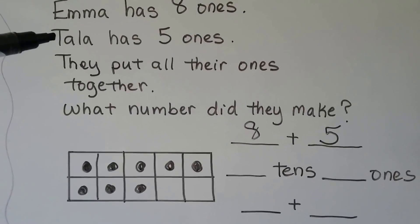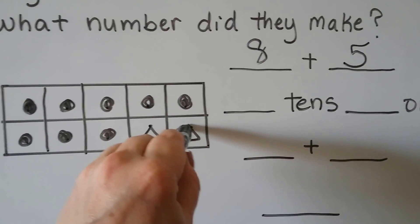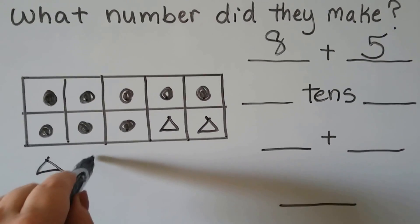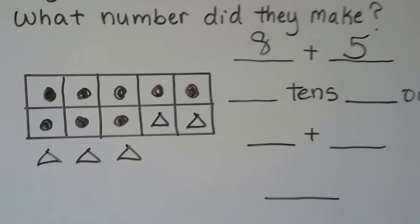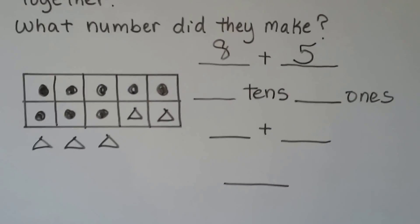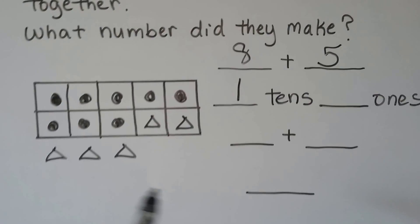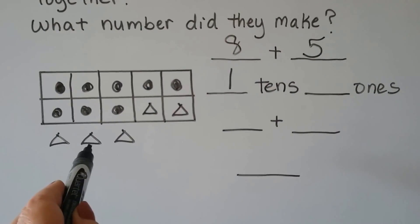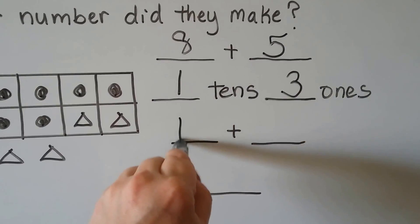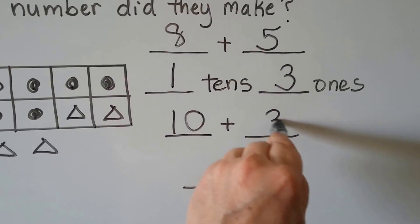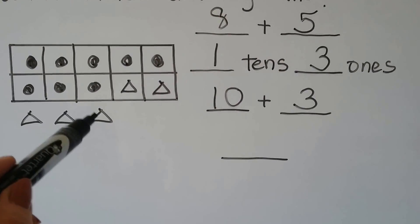Tala has 5 ones — let's give her triangles: 1, 2, 3, 4, 5. So how many tens are there? We filled the 10 frame, so there's one 10. And how many ones? 1, 2, 3 — 3 ones. That means there's a 10 and a 3. That means we have 10, 11, 12, 13.